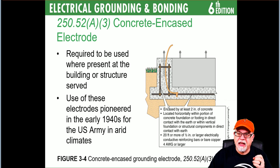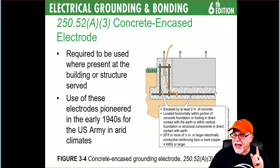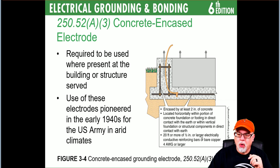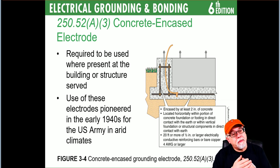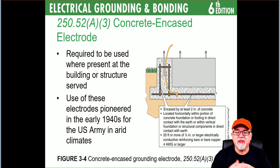As shown in the graphic, the rebar has to be encased in at least two inches of concrete, located horizontally or vertically within the foundation or footing in direct contact with the earth. It has to be 20 feet or more of half-inch or larger electrically conductive reinforcing bars, or bare copper of AWG 4 or larger. Tying pieces together requires only typical tie wires — nothing special, no special clamps.